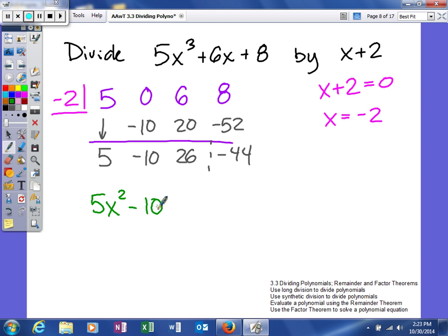And then we'll say negative 10x. So, we just decrease by 1 every time and then plus 26. Now, as you can see, we have a quadratic term, a linear term, and a constant, but we still have a number left.